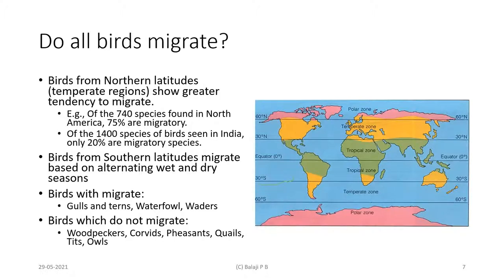Why do birds in the tropical zone migrate? In the tropical zone we have alternating dry and wet seasons where food availability changes throughout the year, so birds migrate in response to changing climatic conditions. Family-wise, birds showing the greatest tendency to migrate are gulls and terns, waterfowl, and waders — in these families, migratory birds are the rule and resident birds are the exception.